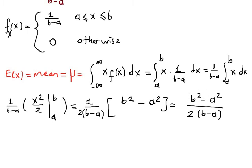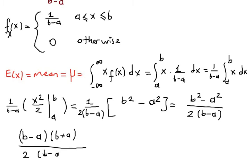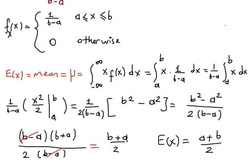The numerator is the difference of two squares, which factors as b minus a times b plus a. The b minus a terms cancel, so we obtain b plus a over two. Therefore, the expectation, or mean mu, of the uniform random variable is a plus b over two.